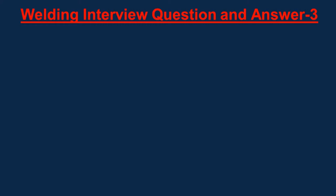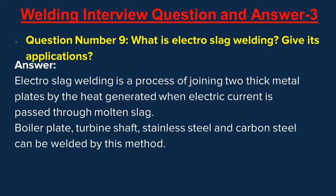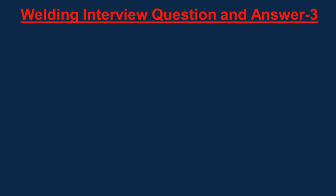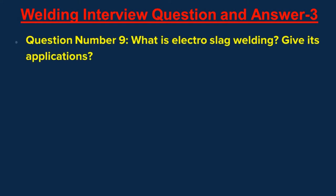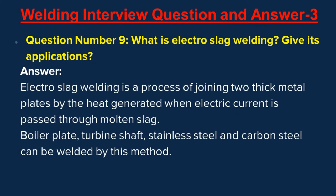Question number nine: What is electro slag welding? Give its applications. Answer: Electro slag welding is a process of joining two thick metal plates by the heat generated when electric current is passed through molten slag. Applications include boiler plates, turbine shafts, stainless steel, and carbon steel.